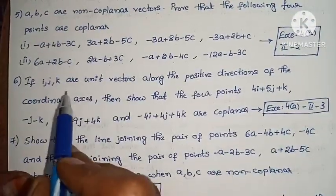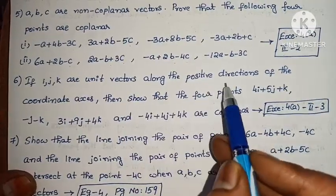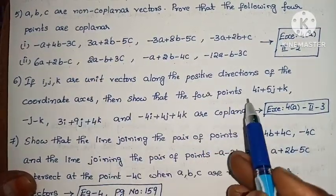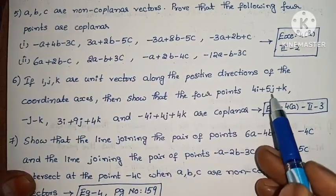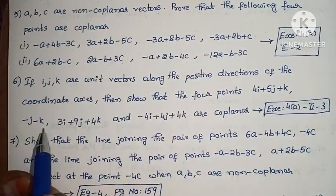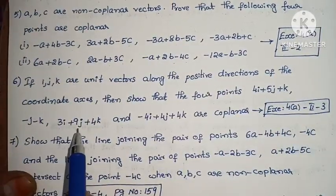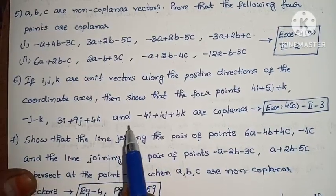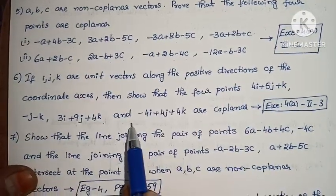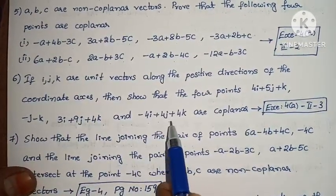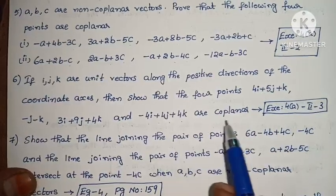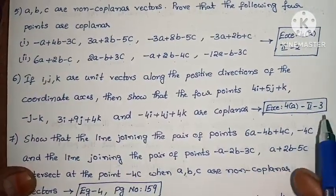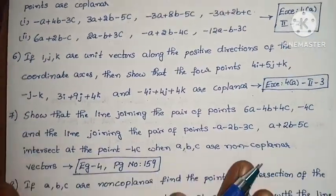Next: If I, J, K are unit vectors along the positive directions of the coordinate axes, show that the 4 points 4I + 5J + K, minus J minus K, 3I + 9J + 4K, and minus 4I + 4J + 4K are coplanar. Exercise 4A, second exercise, problem 3.